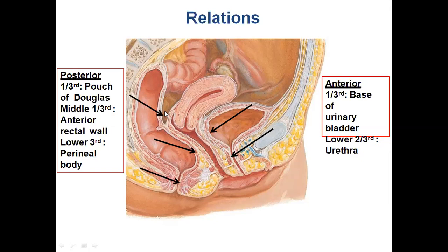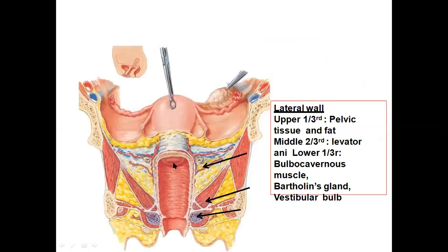The pouch of Douglas is the peritoneal fold seen between the cervix, vagina, and the rectum, where we have coils of small intestines. The middle one-third of the vagina is related to the anterior rectal wall and the lower third is related to the perineal body. You can see this is the uterus — fundus, body, cervix — and this whole passage of around 10 cm in length is the vagina. Laterally, the vagina is related in the upper one-third to the pelvic fascia, middle one-third to levator ani muscle. As we come down, we have the Bartholin glands, which we saw when discussing the vulva, and on either side the bulbocavernosus muscle.